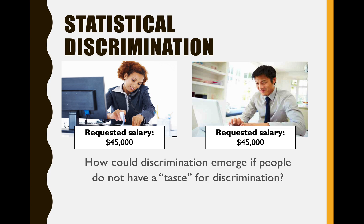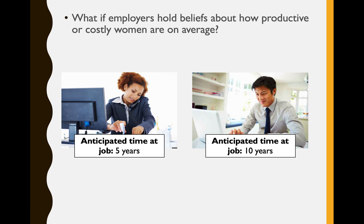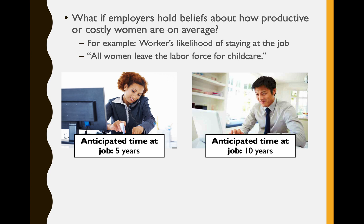Now let's talk about the second mainstream neoclassical theory of discrimination — statistical discrimination. How could discrimination emerge if people don't have a taste for discrimination — they're generally well-meaning people and don't dislike a certain group — but we still see some level of discrimination? What if employers hold beliefs about how productive or costly women are on average? For instance, you could think about a worker's likelihood of staying at a job. An employer might say, what if I hire this woman and she decides to leave the labor force because she has a kid and wants to care for her child? So the employer might say, I think this woman might only stay at this job for five years. But men are less likely to quit or take paternity leave or care for their children, so this man would stay longer — maybe 10 years instead of five.